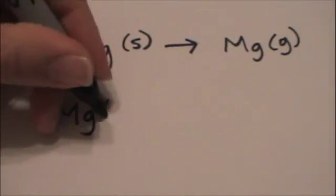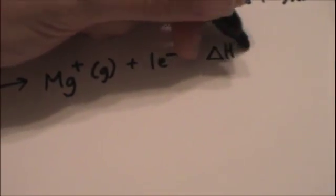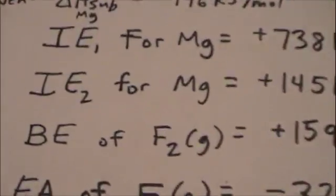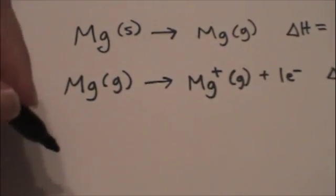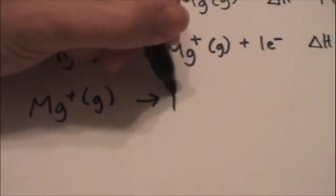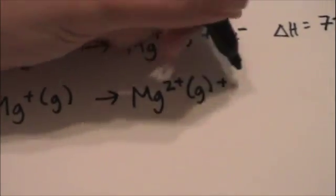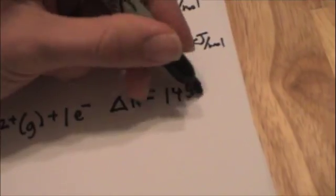So we can draw magnesium in the gas phase. The energy required to remove an electron forms Mg⁺ and one electron, and the delta H is the first ionization energy: 738 kJ per mole. We're also given the second ionization energy for magnesium — that's the energy required to remove an electron from Mg⁺ in the gaseous state, giving Mg²⁺ plus one electron. The delta H for that is 1451 kJ per mole.